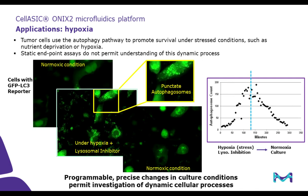Another common live cell imaging application is to study intracellular trafficking and morphologies of intracellular organelles. Here we are studying autophagy response by visualizing autophagosome formation under hypoxic condition. Cells in this study expressed GFP-LC3 protein, which localizes to the ribosomal compartment. Under normoxic condition, cells exhibit broad green fluorescence. Under hypoxic condition, cellular stress activates autophagy, and autophagosome formation can be seen as distinctive intracellular punctate formation. Using the CellASIC setup, we can cycle back and forth between normoxic, hypoxic, and normoxic conditions to study spatiotemporal dynamics of autophagy responses.